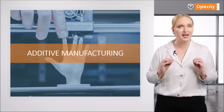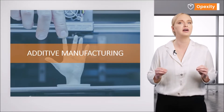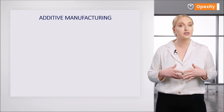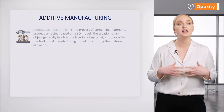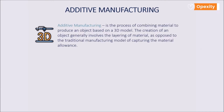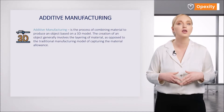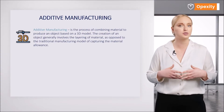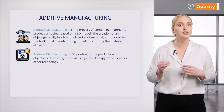What is additive manufacturing? In the literature, the most common definition is the process of combining material to produce an object based on a 3D model. The creation generally involves the layering of material, as opposed to the traditional manufacturing model of removing the material allowance. Until recently, another term was used: 3D printing.